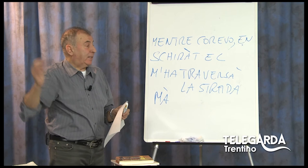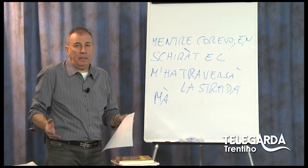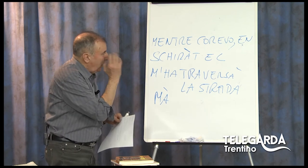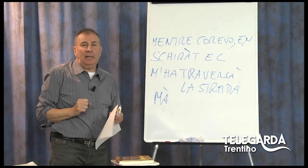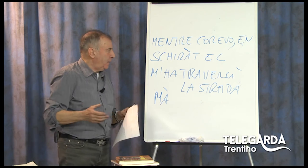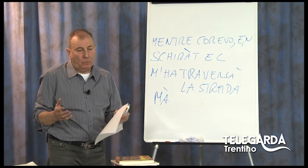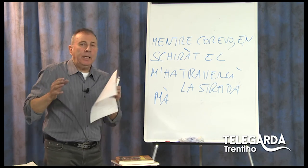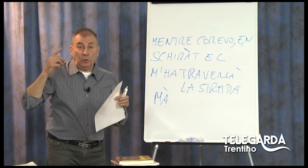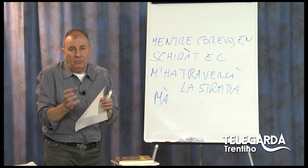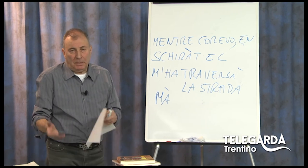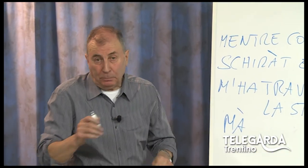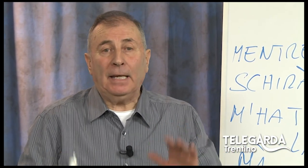A meno che uno non legga senza pausa: mentre corevo en schirat, en ma traversa la strada. Allora chiaramente vale la regola dell'elisione. Bene, quindi su questa lezione di oggi, che riguarda l'uso dell'elisione, l'apostrofo, eccetera, ritornerò ancora, perché più avanti arriverò a un vero compito in classe che farò insieme a voi: avremo un testo scritto in dialetto in modo molto scorretto, e noi andremo a cercare di correggerlo. Con questo, anche oggi ho finito con questa puntata speciale. Spero di ritrovarvi alla prossima puntata, spero sempre più numerosi. Vi ringrazio per l'attenzione, ricordandovi che non è mai troppo tardi per imparare il dialetto. Arrivederci!